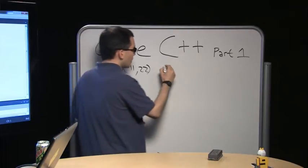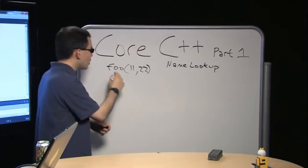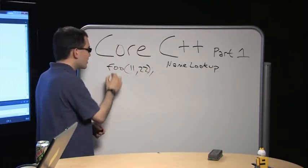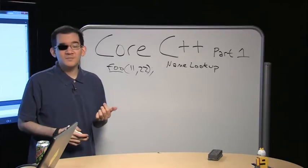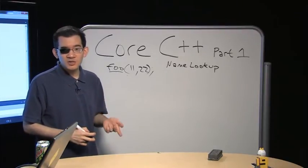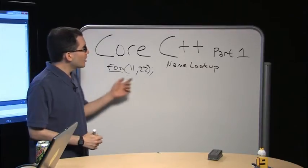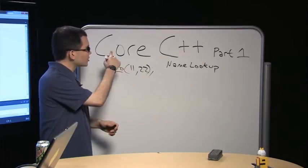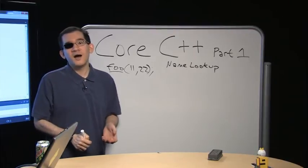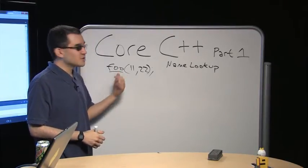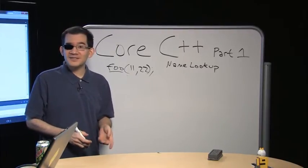First, the compiler has to do name lookup. It sees you said foo(11.22) and asks which foo you want. Is it in the global namespace? Is it in another namespace like namespace std? Is it in a sub-namespace of that? Is it a class member function? Maybe I'm within a member function of a class bar, and when I say foo(11.22), I'm calling a class member function. Do I want that one? And if the arguments are of class type, maybe argument-dependent lookup applies.